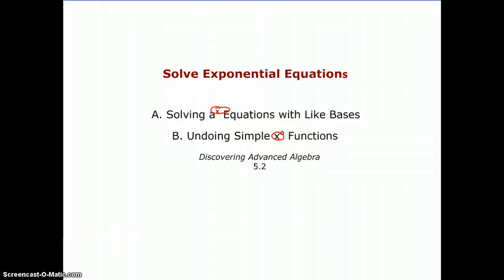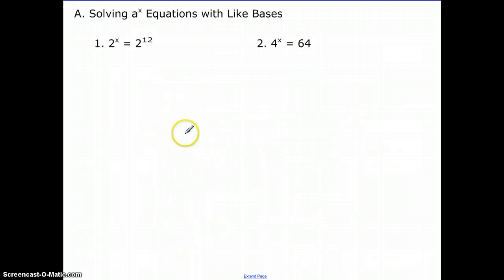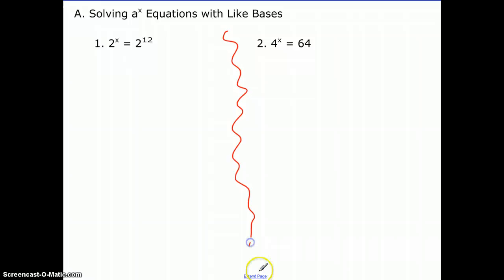So let's get started with the first one. We're going to start really simple here and look at our first example, and it's just to illustrate a point. If you have like bases in an equation such as 2^x = 2^12, then it becomes really easy to look for an additional pattern here. The only way for two to something power to equal two to the twelfth is if that exponent is 12. So that's what we're looking for.